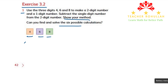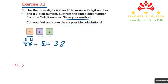The first number that I can make is 46 minus 8. To subtract 8 from 46, we subtract 8 from the ones digit. We don't have enough, so we borrow from the tens digit. If you borrow one from the tens, it becomes 3, and the number in the ones digit becomes 16. 16 minus 8 equals 8, and the 3 in the tens place minus nothing is 3. So the difference between 46 and 8 is 38.